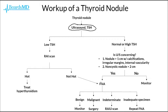On the other hand, going back to the start of our workup: if the TSH is found to be normal or high, we then need to take a closer look at the ultrasound to see if it is concerning. If we see a nodule greater than 1 centimeter with calcifications, irregular margins, or internal vascularity, or a non-cystic nodule greater than 2 centimeters, then we are more concerned about malignancy and proceed to a fine needle aspiration.